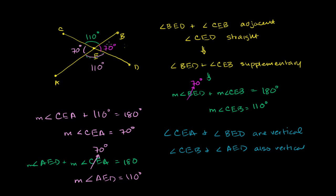So this angle is 110 degrees. If you take any adjacent angles whose outer sides form a straight angle, they add up to 180. This one and that one add up to 180, and so do all the other adjacent pairs. If you go all the way around the circle, they add up to 360 degrees: 70 plus 110 is 180, plus 70 is 250, plus 110 is 360 degrees. In the next video, we'll actually prove using generalized numbers — not just 70 degrees — that vertical angles are always equal.